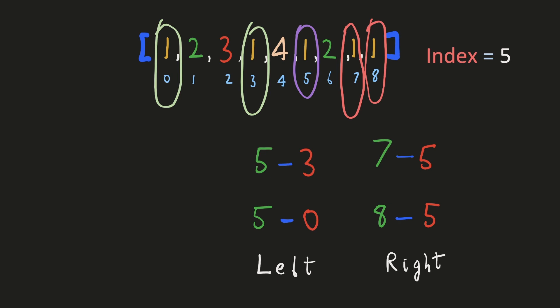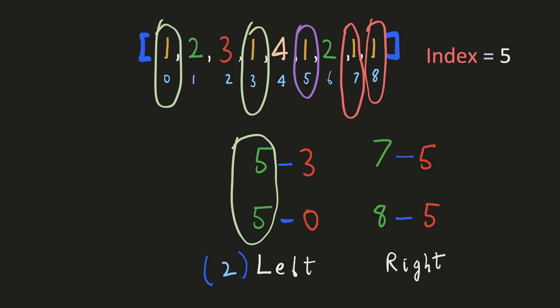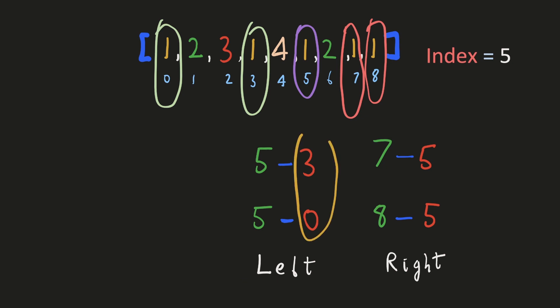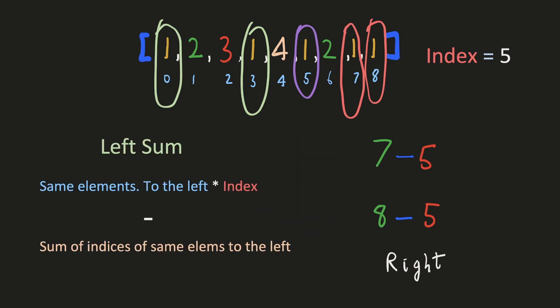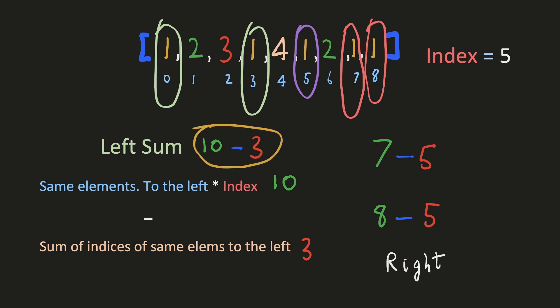One important observation is that there are two elements on the left with a value of 1. Since 5 is greater than all the indices on the left, to calculate the sum of the distances we add 5 two times. For the subtraction part, we subtract each index that occurs on the left — this part is the sum of the indices with the shared value on the left. So we generalize: the positive part is the count of elements to the left with the same value multiplied by our current index (2×5), and the negative part is the sum of those indices (0+3=3). Hence the sum of distances from the left is 7.